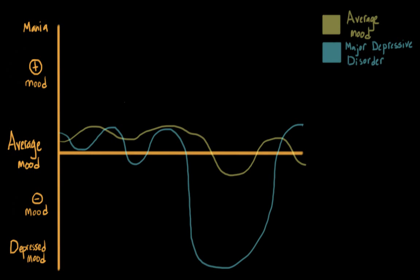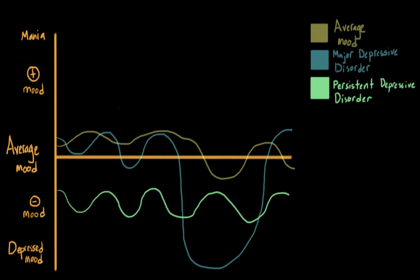But we also have another disorder called persistent depressive disorder, or PDD. This is a chronic form of depression, and it used to be called dysthymia in earlier editions of the DSM.